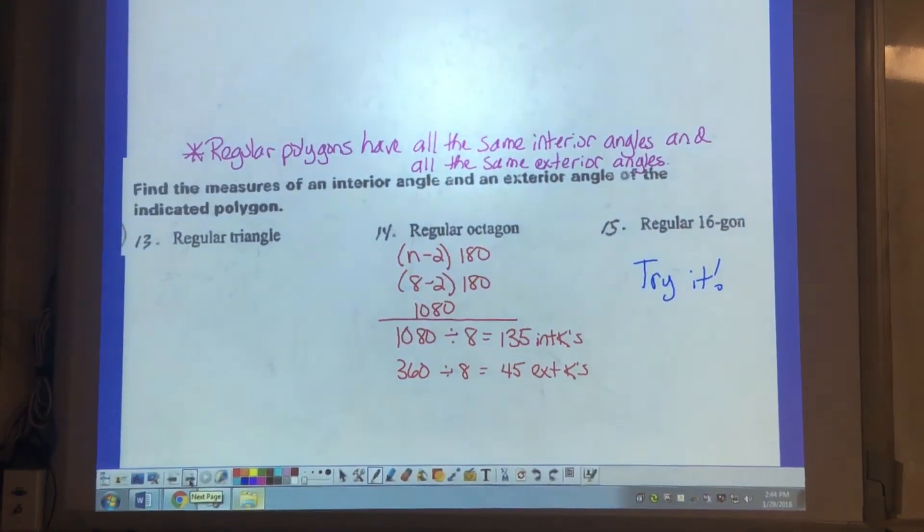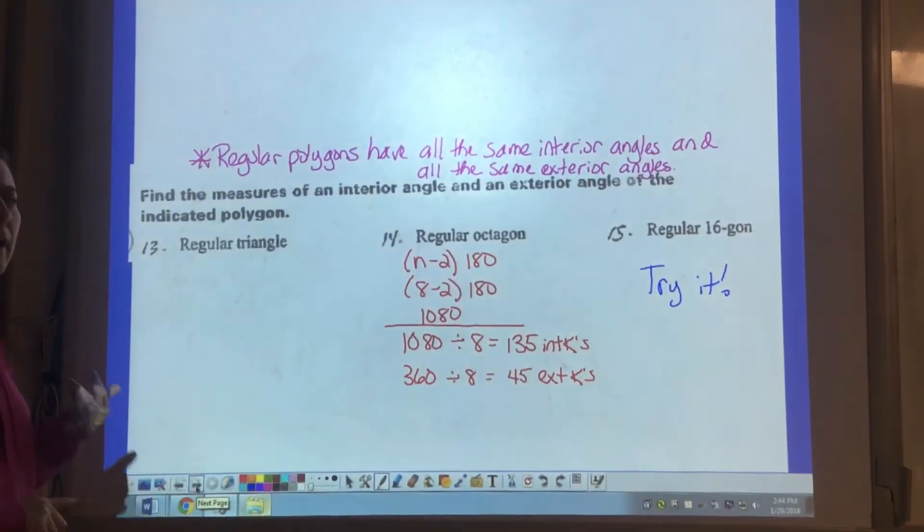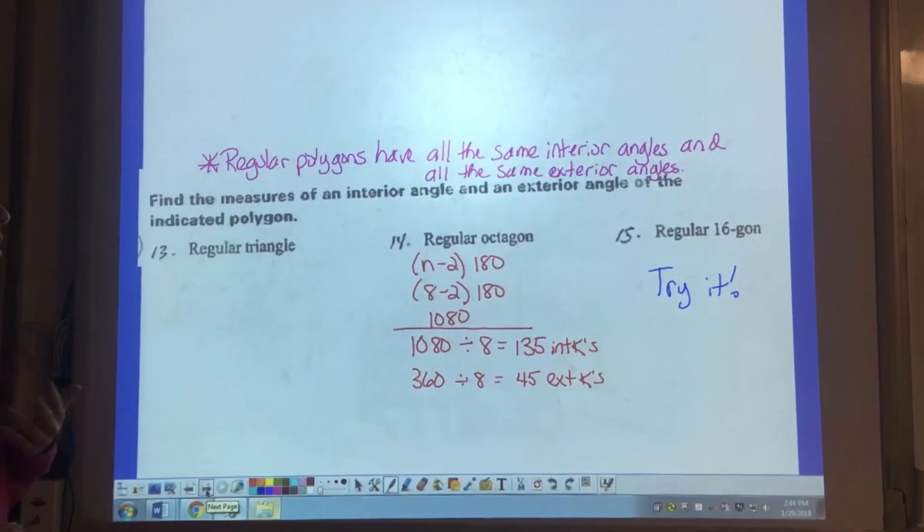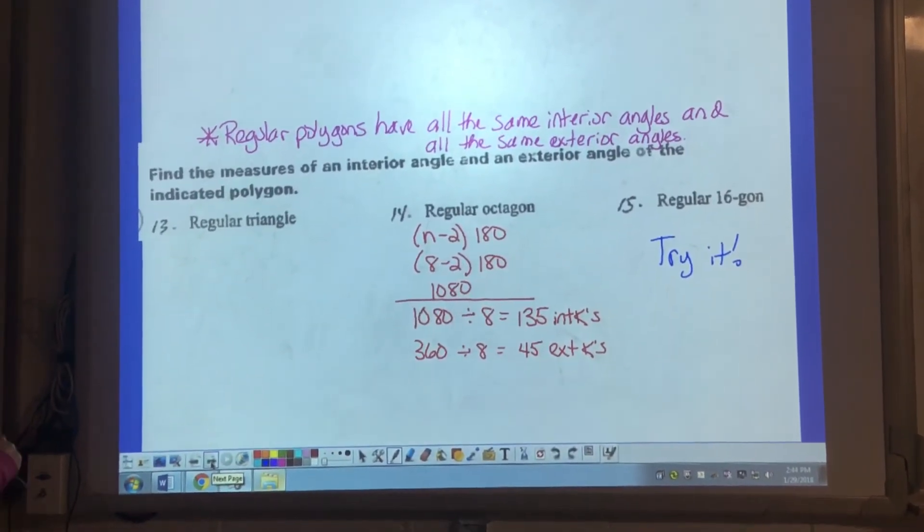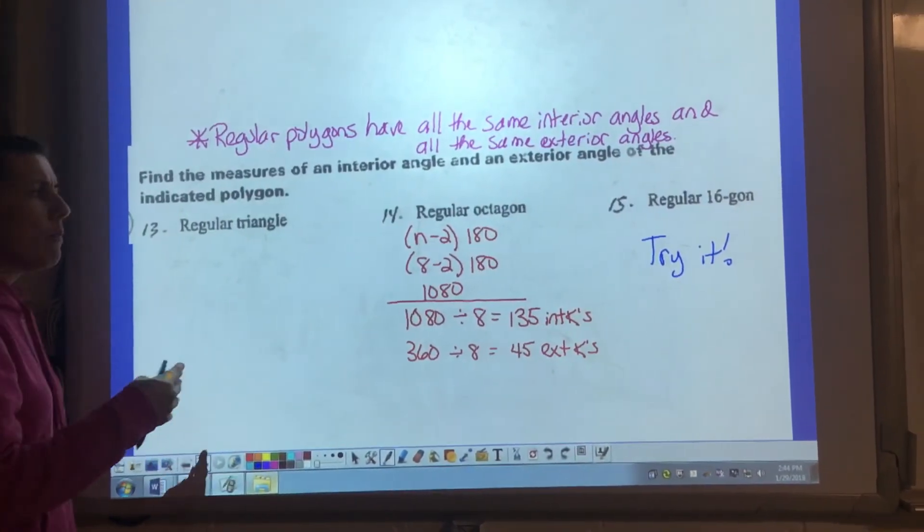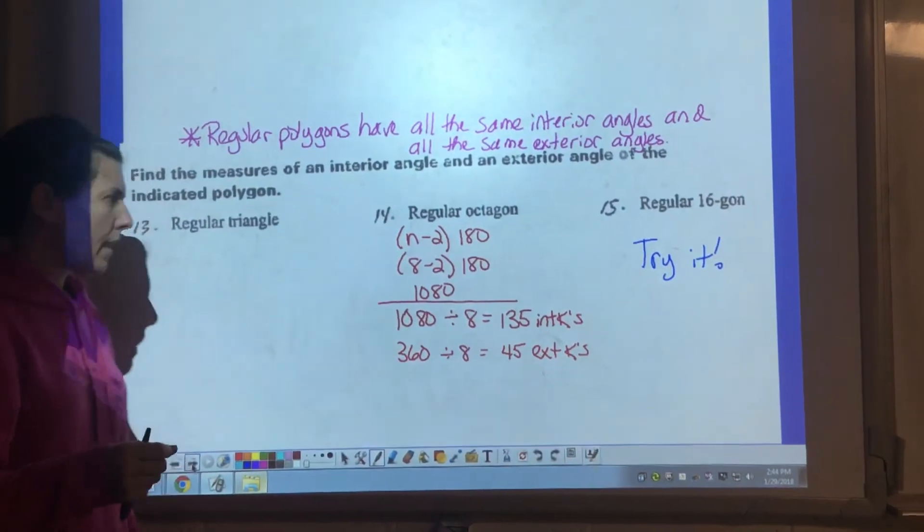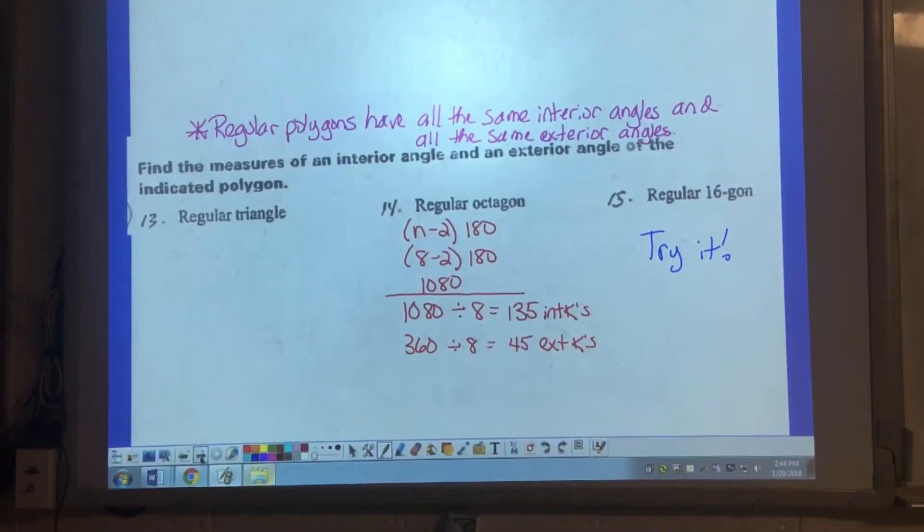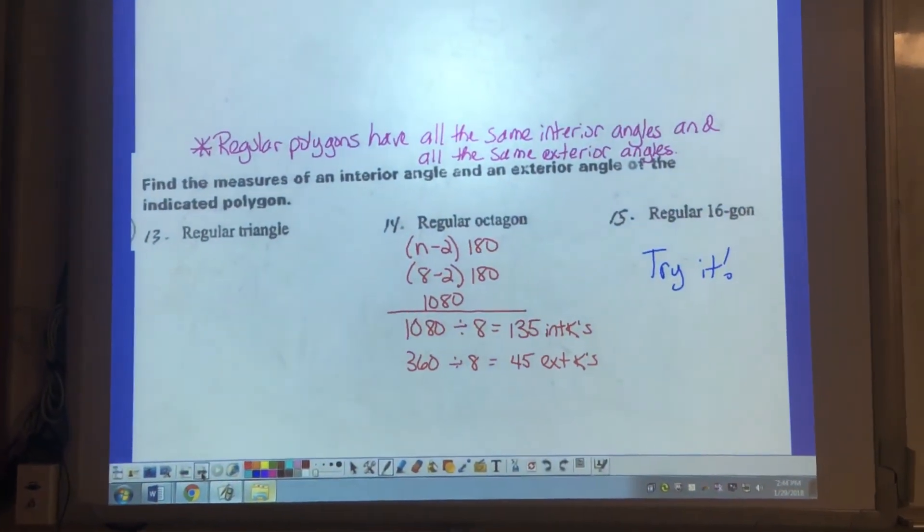Remember, all polygons that are regular, they have all the same interior angles and all the same exterior angles. This is a similar idea. We're using that same formula, but we know that all the angles are the same. So what we're trying to find is the measure of the interior and the exterior angles.